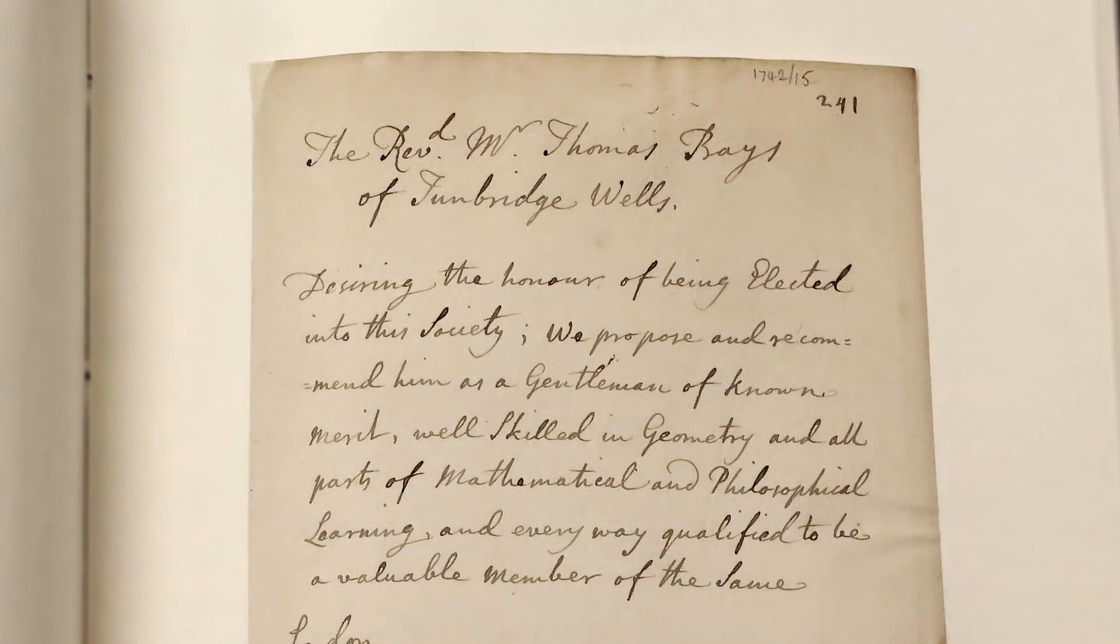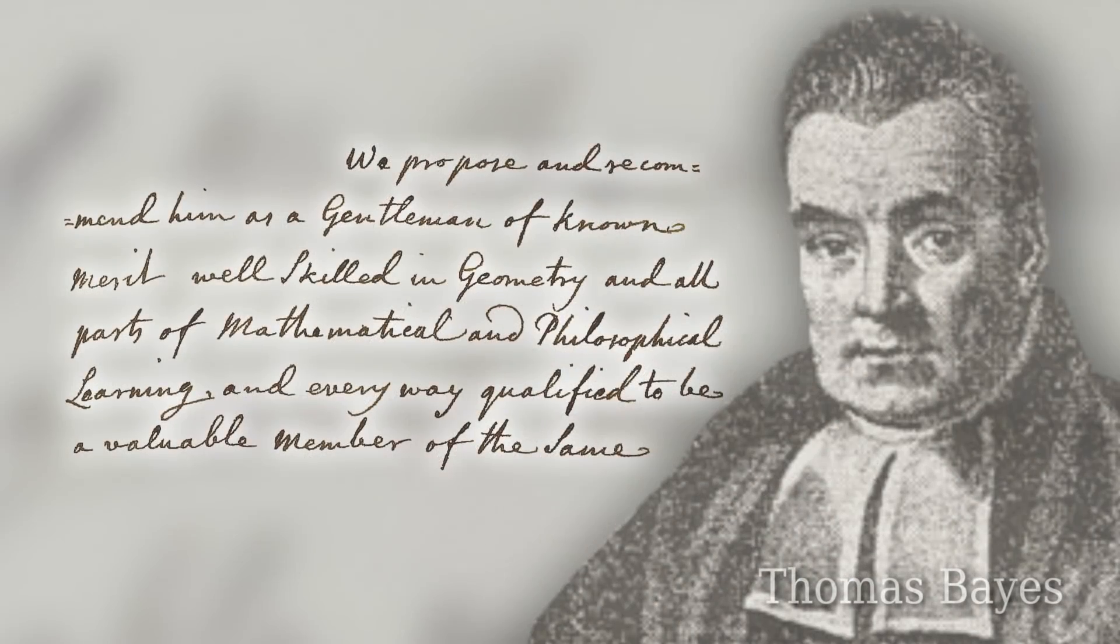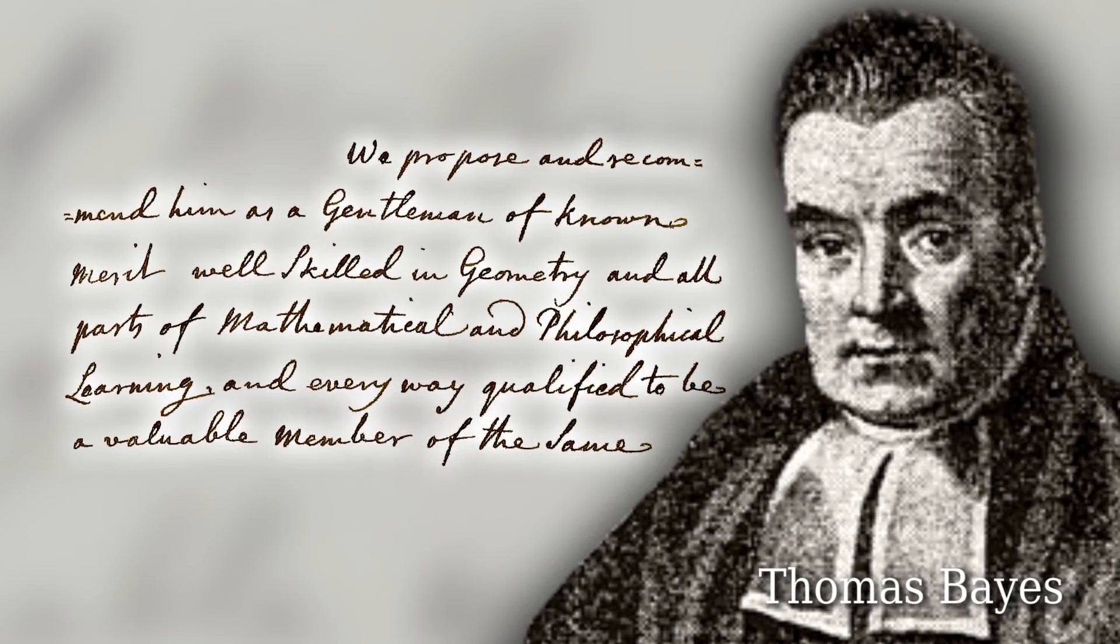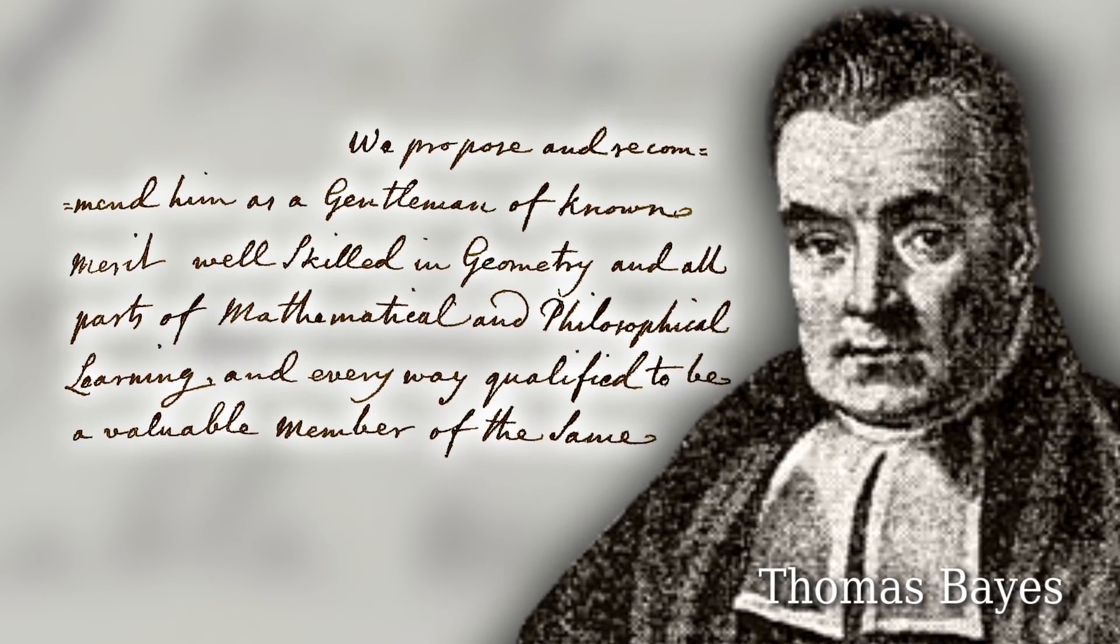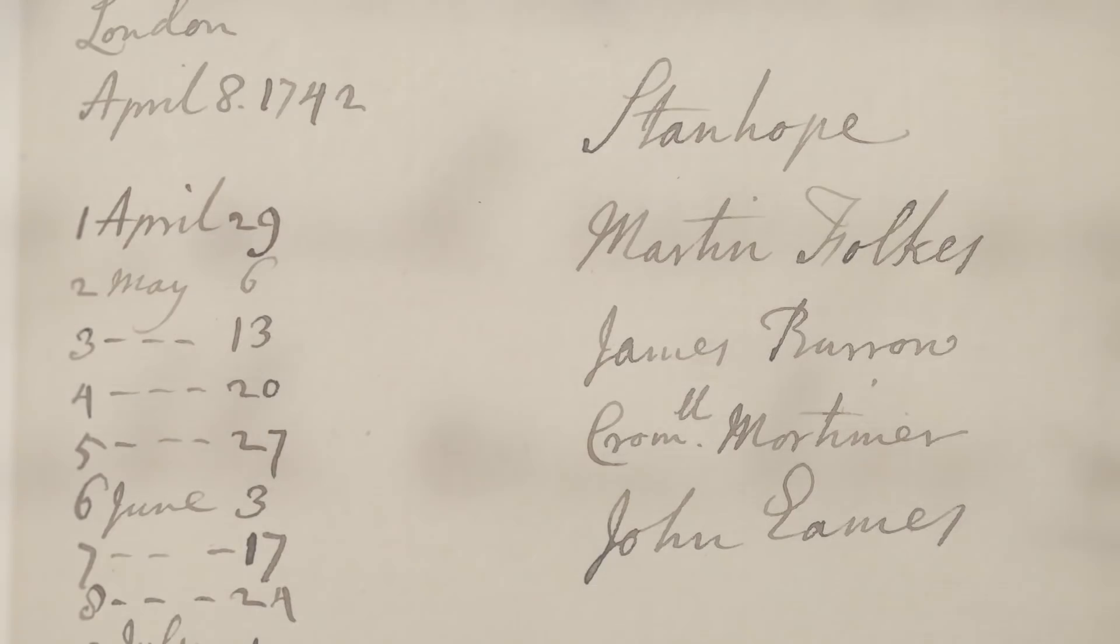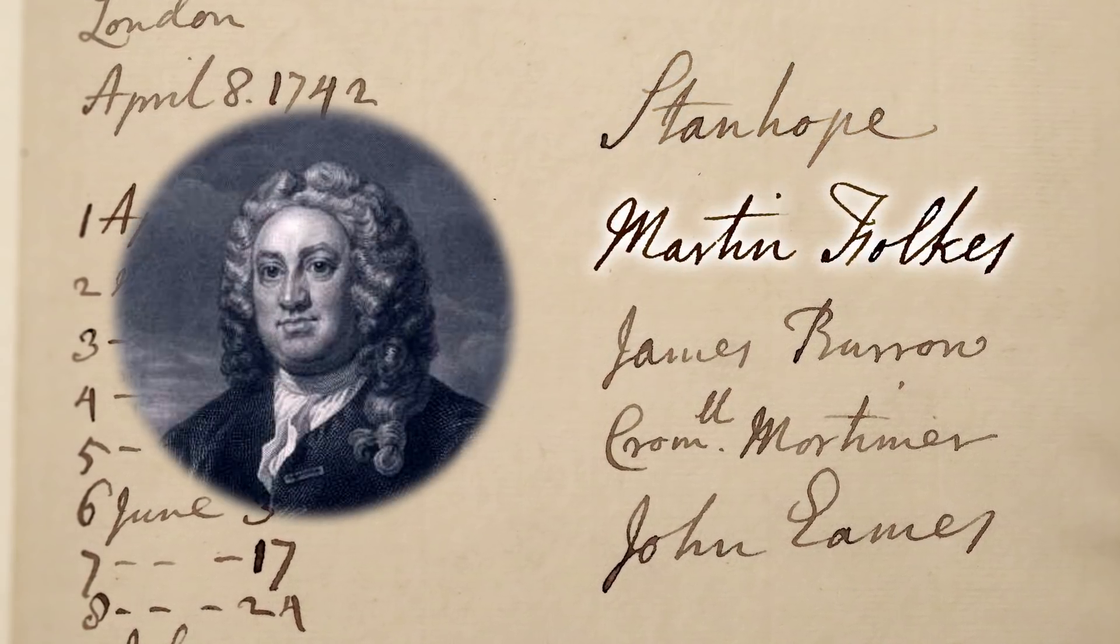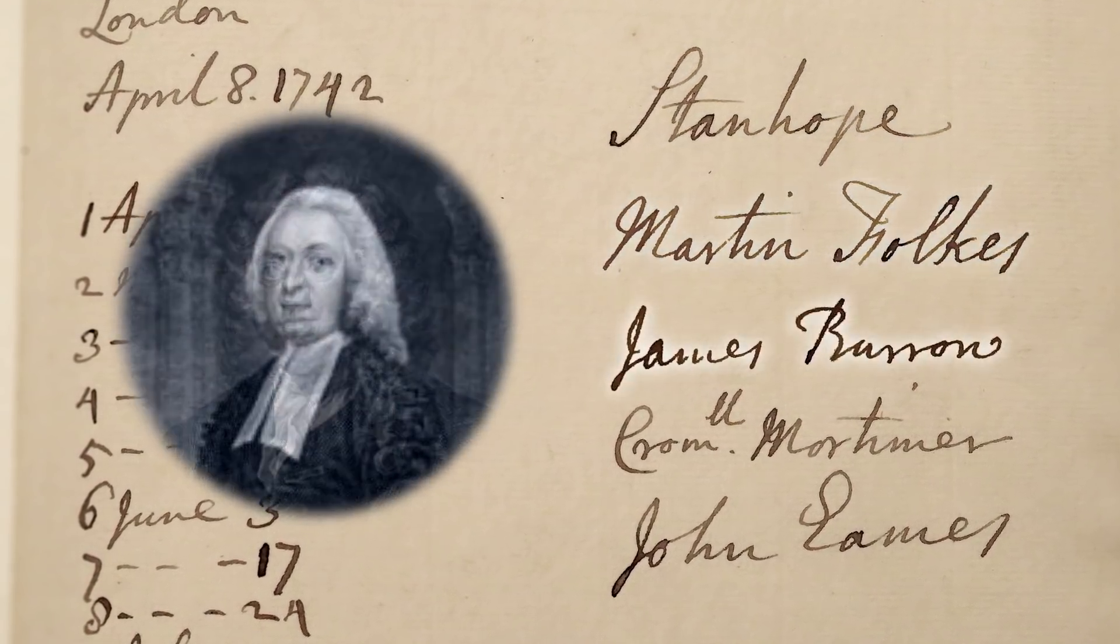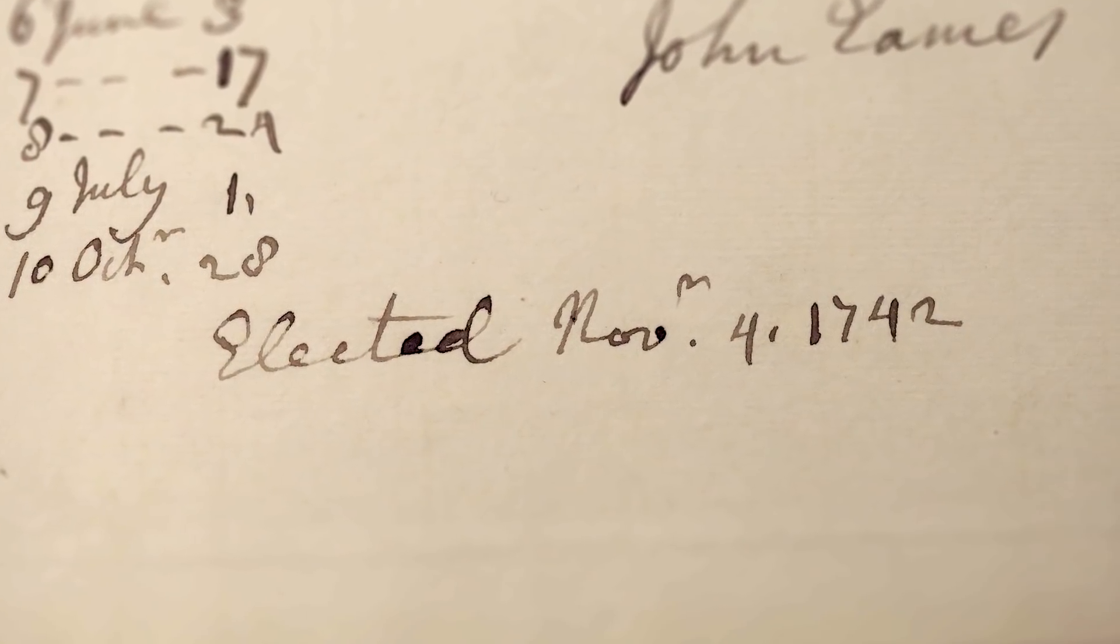All right, let's have a look at this one. You've done some videos on Thomas Bayes, haven't you? As we're speaking, I'm working on one. We propose and recommend him as a gentleman of known merit. Well skilled in geometry and all parts of mathematical and philosophical learning in every way qualified to be a valuable member of the same. He has a bit of aristocratic support there. There's Earl Stanhope, Martin Foulkes, who was president of the Royal Society. James Burrow is there. You can see he's elected November the 4th, 1742.